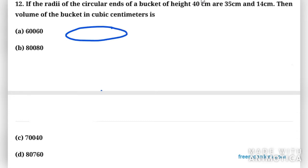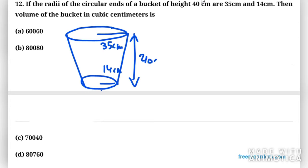We are given the height as 40 cm. The radii of the upper part is given, radii of the lower part is given. The upper part is 35 cm and the lower part is 14 cm, whereas the height for this is 40 cm.